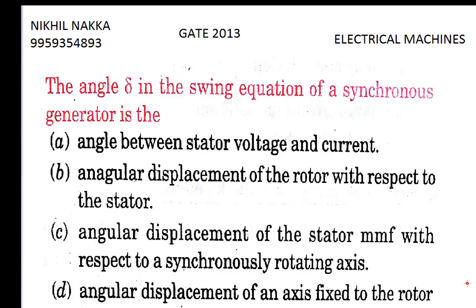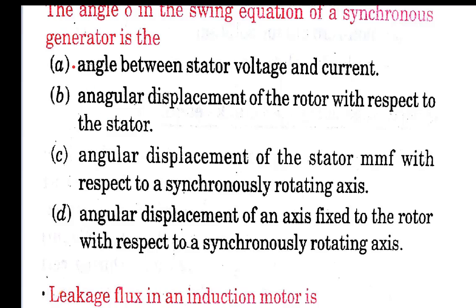What's up guys, this is Nikhil presenting the previously solved questions of GATE 2013 paper in the electrical machines part. Today's question is: the angle Delta in the swing equation of a synchronous generator is which of the following options?